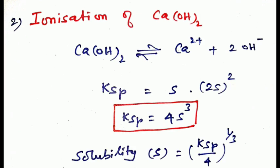For the second salt, consider the ionization of calcium hydroxide: Ca(OH)₂ ⇌ Ca²⁺ + 2OH⁻. The solubility product Ksp equals [Ca²⁺][OH⁻]². If Ca²⁺ = S and OH⁻ = 2S, then Ksp = S × (2S)² = 4S³. Therefore, solubility S equals (Ksp/4)^(1/3).